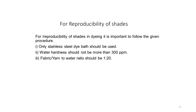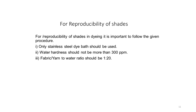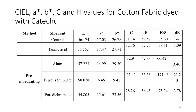For reproducibility of shades in dyeing, it is important to follow certain standards. Only stainless steel dye baths should be used — when iron or rusted iron jigger was used, the whole dyeing process of bulk dyeing got destroyed. Water hardness should be not more than 300 ppm. Fabric and yarn to water ratio should be 1:20 or 1:30.